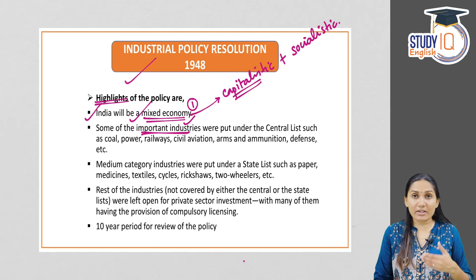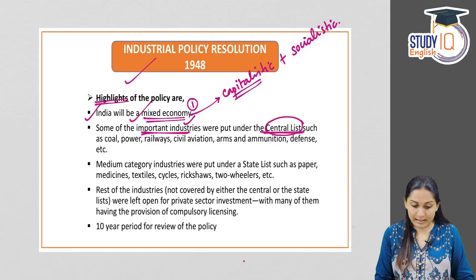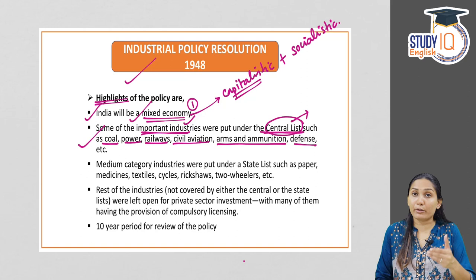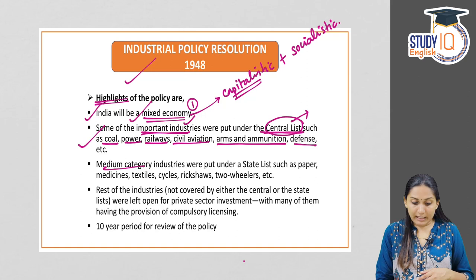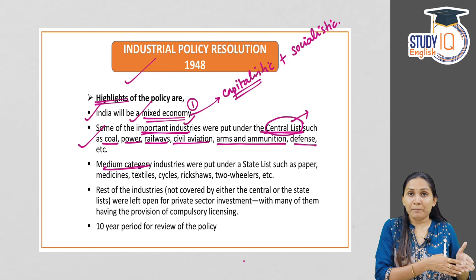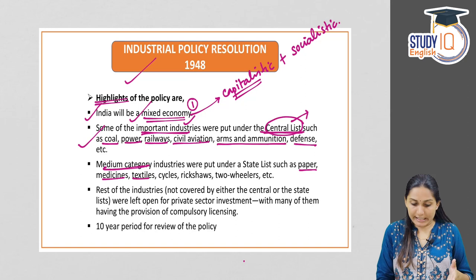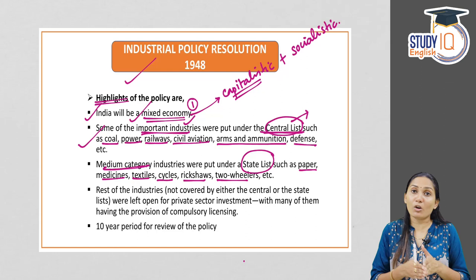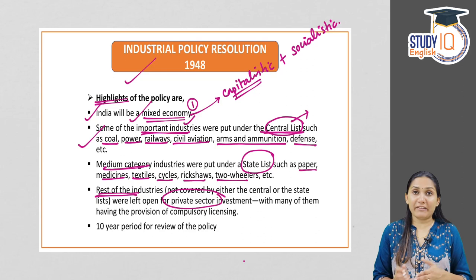The second important announcement was that some strategic industries — very important for the existence of the economy — would be put under the central list. Examples include power, railway, civil aviation, arms and ammunition, defense, etc. These would be under central government's sole power to legislate. Medium category industries like paper, medicines, textiles, cycle, rickshaw, and two-wheelers would be put under the state list, where state governments could legislate. The rest of the industries would be open to the private sector.